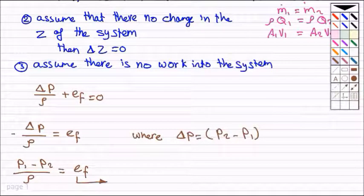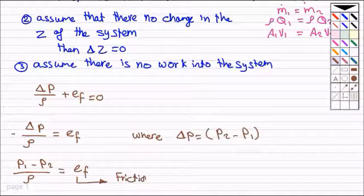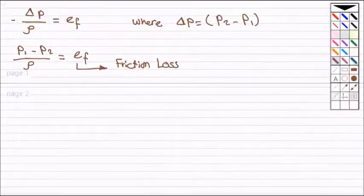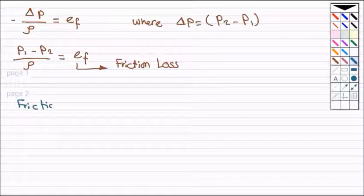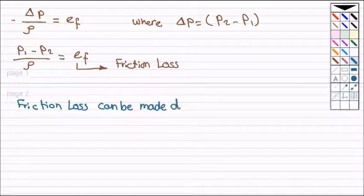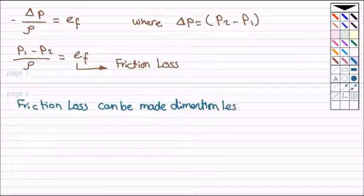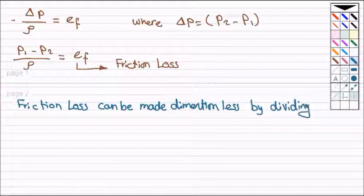ef is a friction loss per unit mass of fluid and it has dimensions length and time, l t to the power minus 2. So if I want to make ef dimensionless, I can do it by dividing.